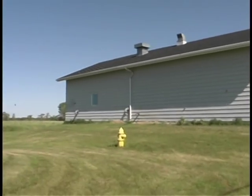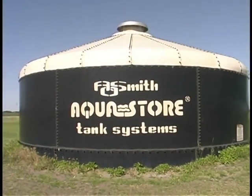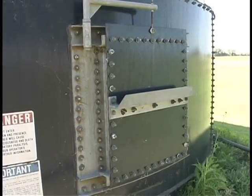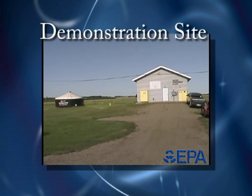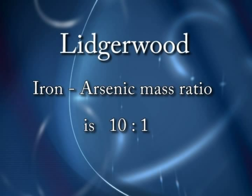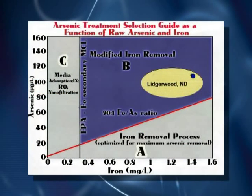The sludge is pumped to a dewatering tank and hauled to a non-hazardous landfill at about 20 cubic yards every two years. The EPA demonstration technology for this system was a modification of the existing system to add more iron, since the natural iron-to-arsenic ratio was only about 10 to 1, placing the system in zone B.